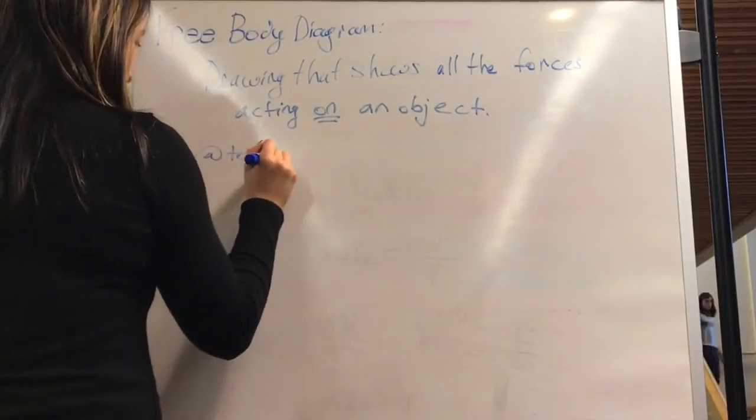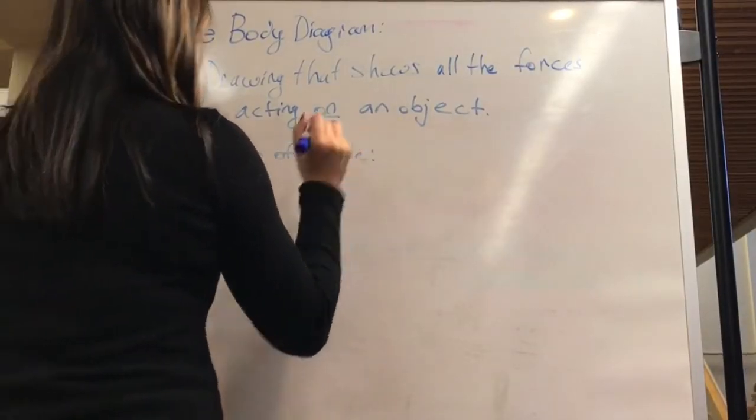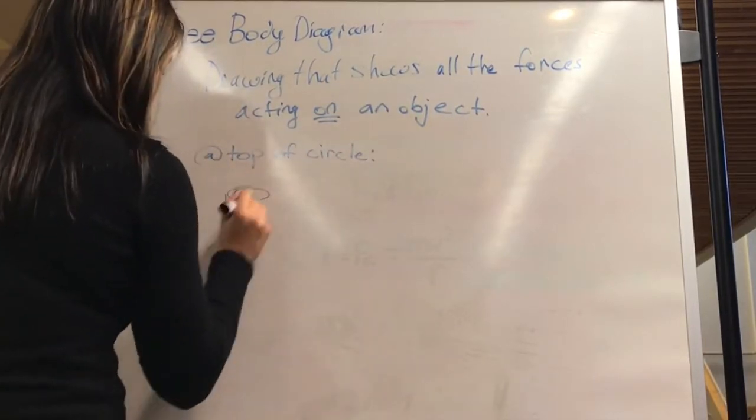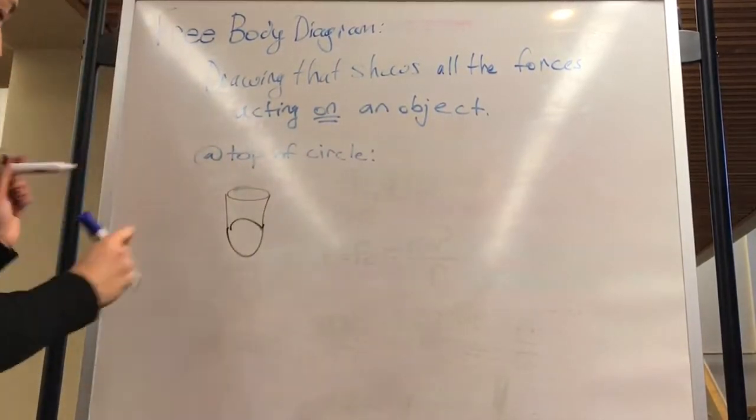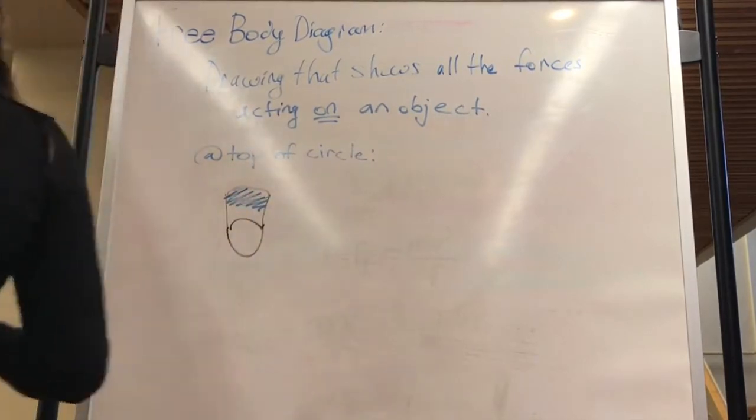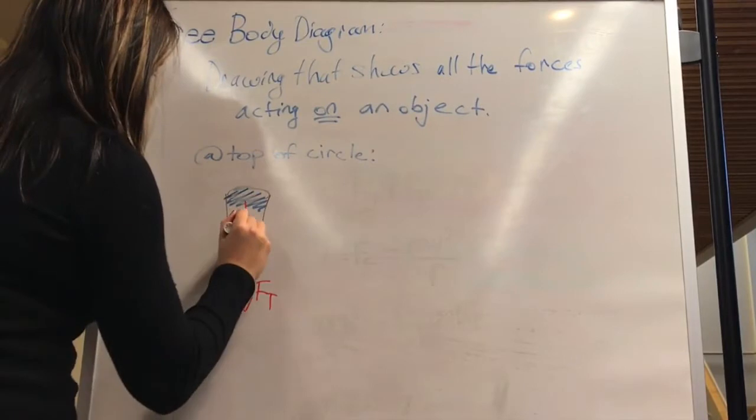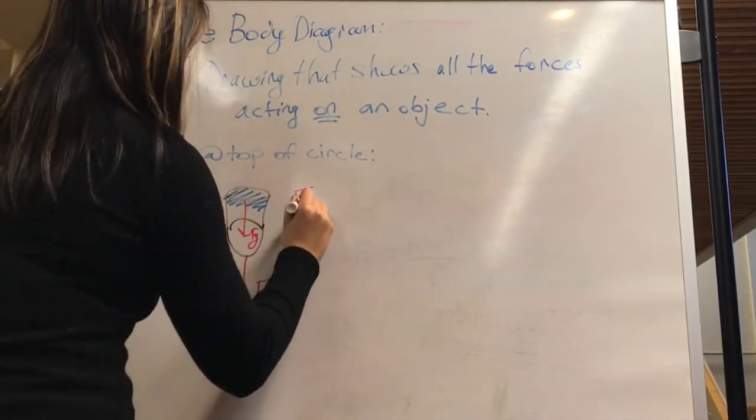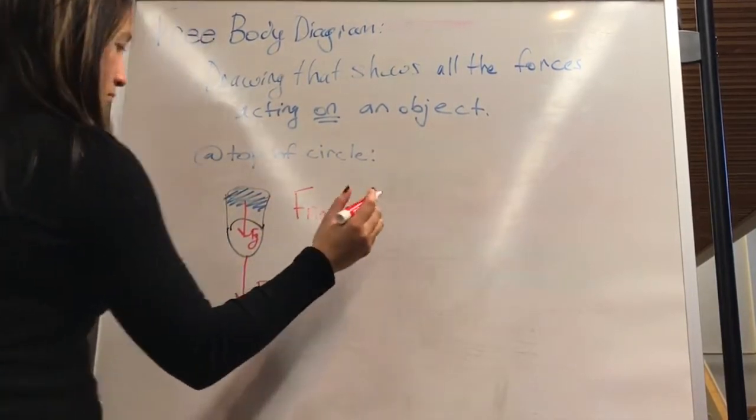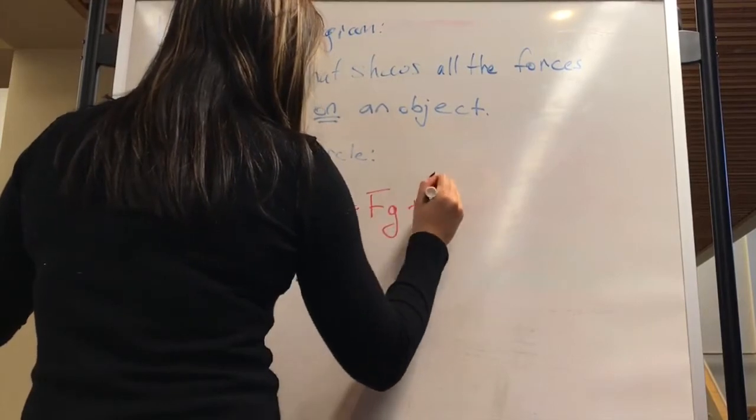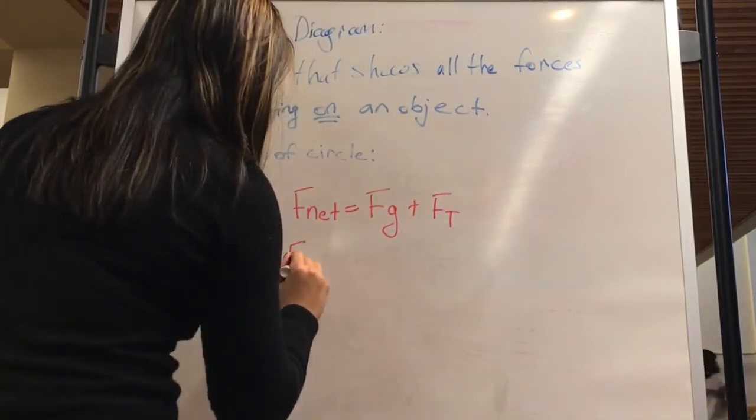A free body diagram models the problem that we're looking at by drawing all of the forces acting on the object. Here we have two free body diagrams. One of the bucket at the top of the circle and one of just the forces acting on the water without the bucket. The forces acting on the water and the bucket at the top of the circle are the forces of gravity and tension. We can say that the net force is equal to gravity plus tension.